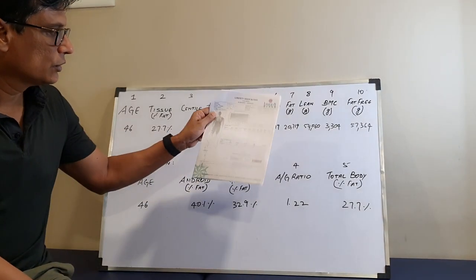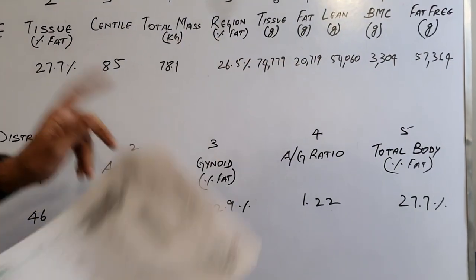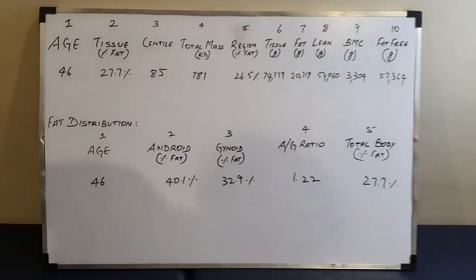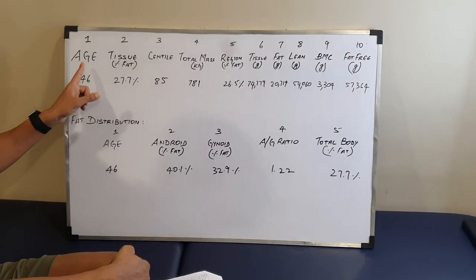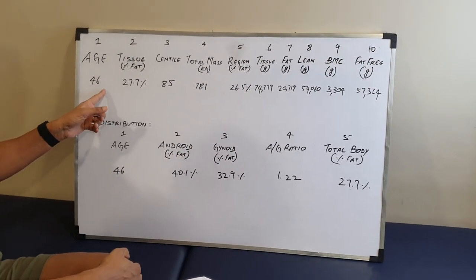This is how the sheet is going to look. I have written down the same info on this board so that I can explain to you clearly. There are so many columns here. The first column is age. It is very simple and straightforward.